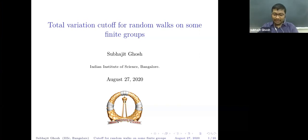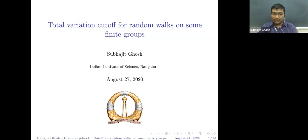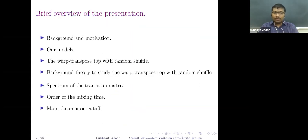Thank you for the introduction, and thanks to the organizers for giving me this opportunity to speak. In this talk I'll be introducing three random models on finite groups, among them I will be discussing one in detail. The title is: total variation cutoff for random walks on some finite groups.